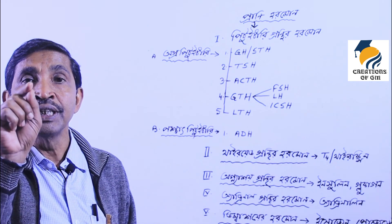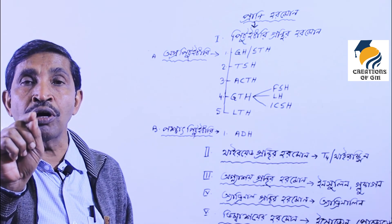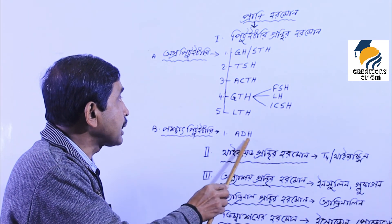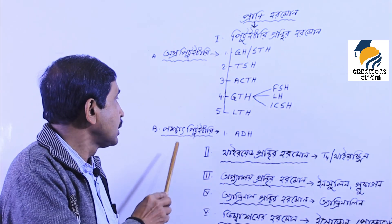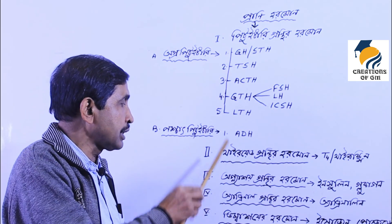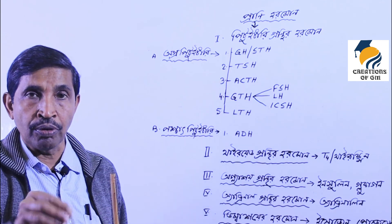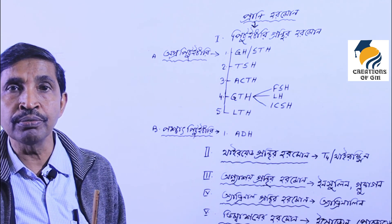This condition — producing large amounts of urine without sugar — is called diabetes insipidus. We have covered the pituitary gland here. The remaining endocrine glands will be discussed in the next class.